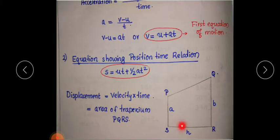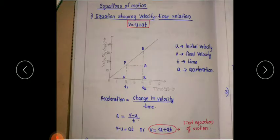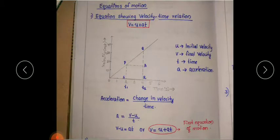From the figure, H is equal to SR, A is equal to PS, and B is equal to QR. On substituting this, we get ½ × SR × (PS + QR). SR represents time, PS represents velocity, and QR represents velocity. So write SR as T, and PS as U — U is the initial velocity, the velocity at time T1. The velocity at time T2 is RQ, which is the final velocity.